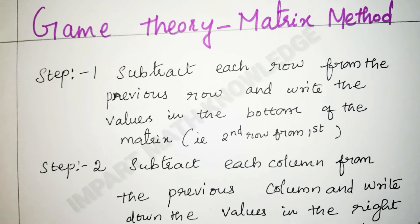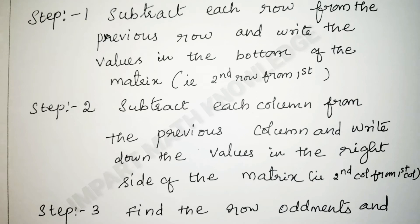Step 1: we have to find the row matrix and column matrix. For the row matrix, we subtract each row from the previous row — second row from first, third row from second, and so on. For the column matrix, we subtract each column from the previous column — second column from first, fourth column from third, and so on.